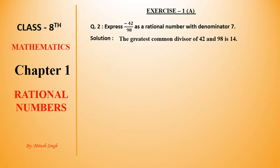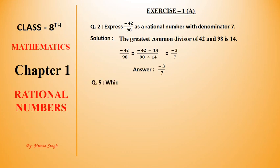The GCD is 14, and 14 divides both numbers. Minus 42 divided by 14 and 98 divided by 14 gives minus 3 upon 7. The denominator is now 7, which is exactly what we needed. So the answer is minus 3 upon 7.